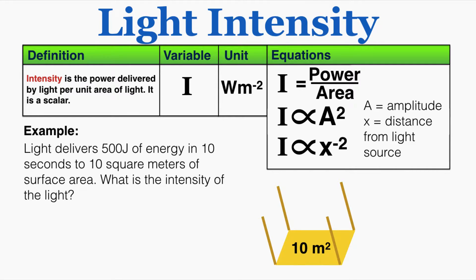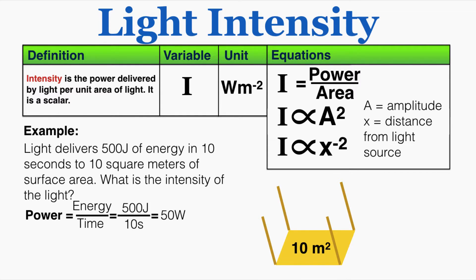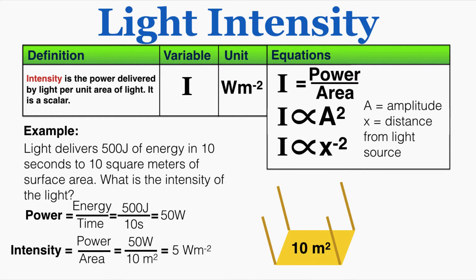First, a quick example with the first equation. Imagine that light is delivering 500 joules of energy in 10 seconds to 10 square meters of surface area, and we want to know the intensity of the light. Because power is energy over time, we find the power is 50 watts. The intensity is power over area: 50 watts over 10 meters squared, which equals 5 watts per meter squared.